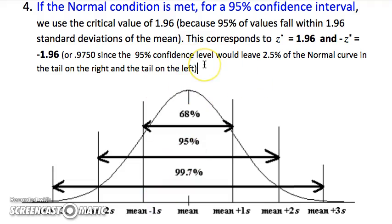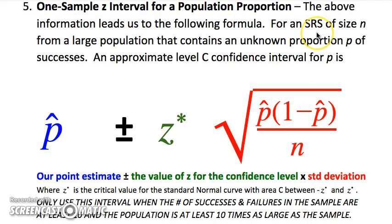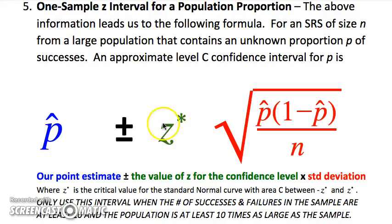When looking at sample proportions, instead of mu we use p-hat because we're estimating the true proportion. This leads us to the one-sample z-interval for a population proportion — a z-interval because we use a z test statistic. The formula is: p-hat (point estimate) ± z* (critical value for the confidence level) × the standard error. The critical value z* changes depending on whether we use 90%, 95%, or 99% confidence. The entire expression to the right of the ± is the margin of error, and n is the sample size.